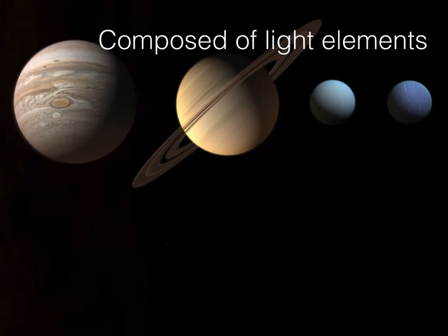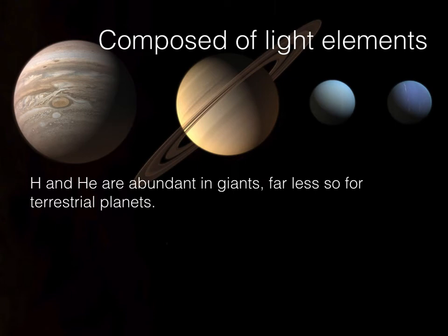These planets are composed mostly of light elements — primarily hydrogen and helium. There's a tremendous abundance of these in the giants, much more than what we find on Earth, Mars, Venus, and Mercury. The terrestrial planets just don't have an abundance of these light elements, namely hydrogen and helium, whereas there's great abundance in the giant planets.